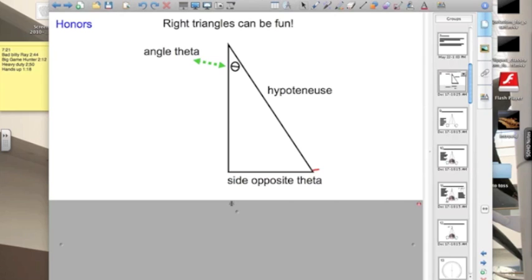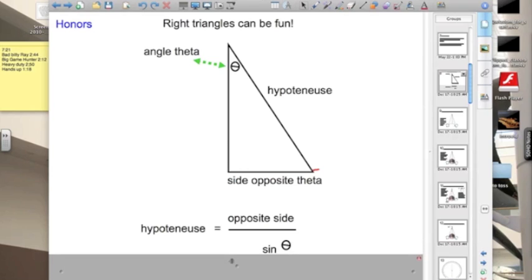Angle theta is our parallax angle, and the side opposite theta is the baseline. We're going to measure the distance by looking and finding the distance for the hypotenuse. Our equation is hypotenuse equals opposite side over sine theta.